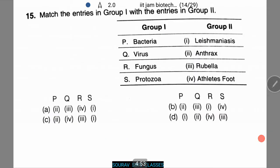Let's do another match-the-following. We are given bacteria, virus, fungus, and protozoa, and we need to match them with their respective diseases in column 2. Starting in reverse — anthrax is a bacterial infection caused by Bacillus anthracis.